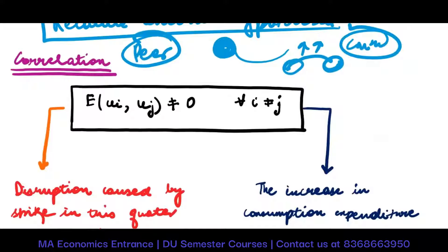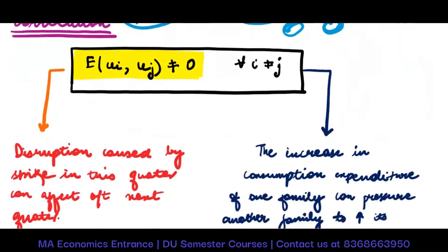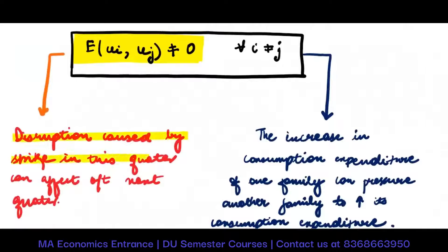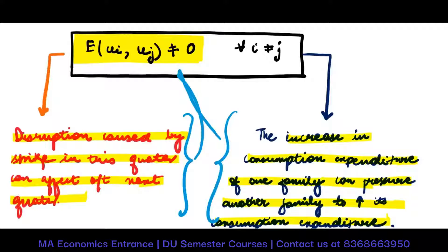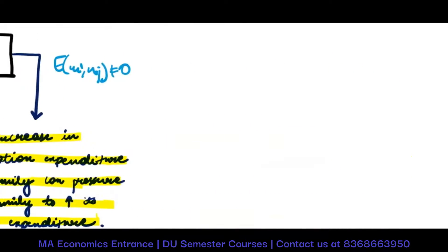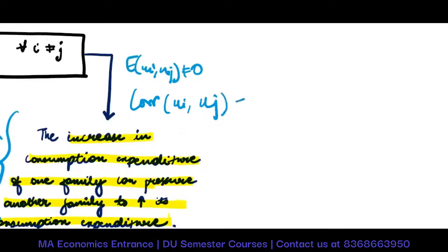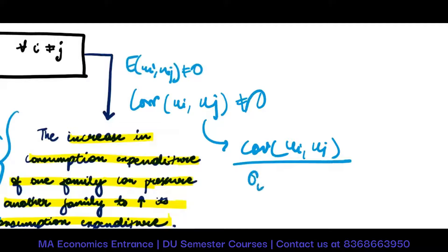Autocorrelation is error correlated with itself. When the expected value E(ui, uj) is not equal to zero — there is some expected value between the cross products — then autocorrelation exists. Disruption caused by a strike this quarter affects the next quarter; an increase in consumption expenditure of one family puts pressure on another. In such situations, E(ui, uj) will not be equal to zero, or the correlation between ui and uj will not be equal to zero.